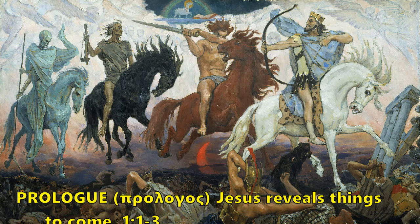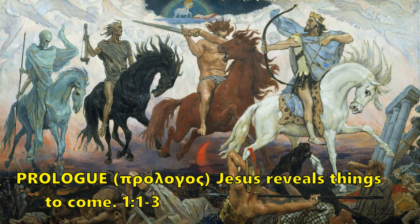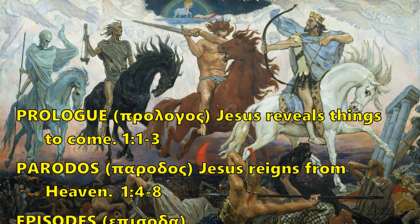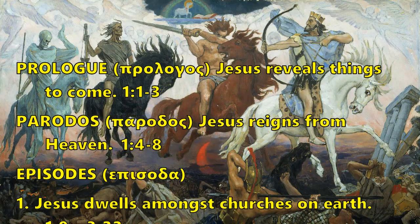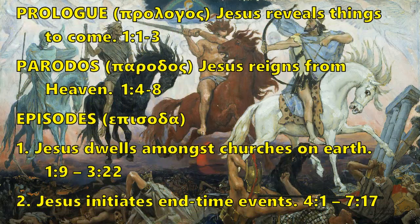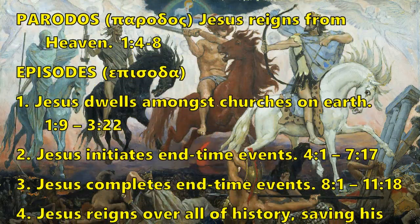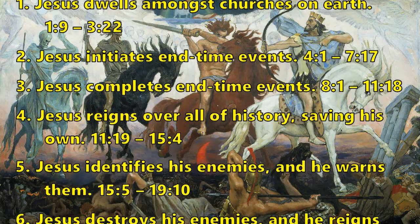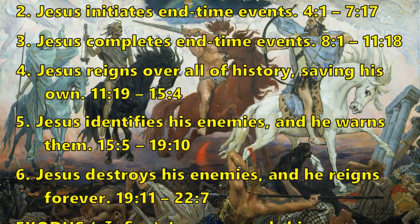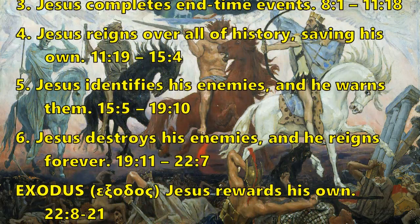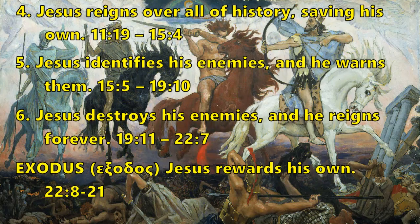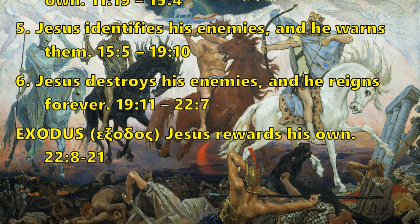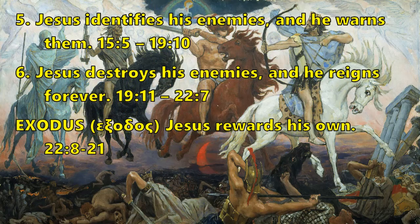Prologue: Jesus reveals things to come. Paradox: Jesus reigns from heaven. Episode 1: Jesus dwells amongst churches on earth. Episode 2: Jesus initiates end-time events. Episode 3: Jesus completes end-time events. Episode 4: Jesus reigns over all of history, saving his own. Episode 5: Jesus identifies his enemies and warns them. Episode 6: Jesus destroys his enemies and reigns forever. Exodus: Jesus rewards his own.